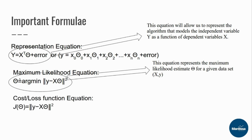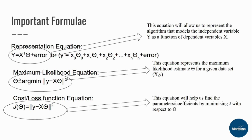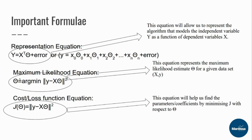The cost or loss function equation is: J(theta) = norm of (y minus x·theta), squared. This equation will help us find the parameters or coefficients by minimizing J with respect to theta.